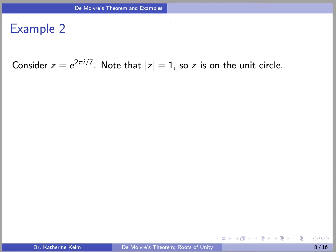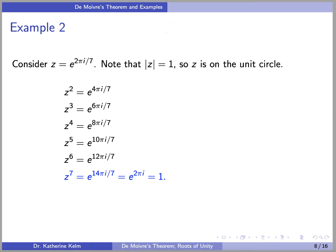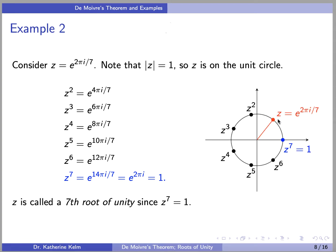Another example: consider z = e^(2πi/7). Note that |z| = 1, so z is on the unit circle, meaning all powers of z are also on the unit circle. Interestingly, z^7 is actually equal to 1. In the diagram, z is at 2π/7, z² is at 4π/7, and so on, until z^7 = e^(2πi) = 1. z is called a seventh root of unity since z^7 = 1.